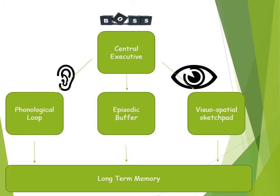The visuospatial sketchpad deals with visual and spatial information. It is made up of different components: the visual cache, which stores visual data and information, and the inner scribe, which allows us to recall and record information in vision. Its capacity is also limited — about three or four objects that we can hold in there.